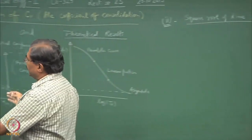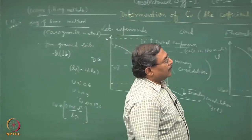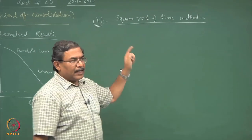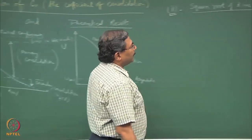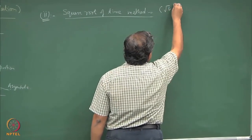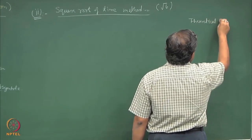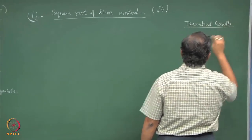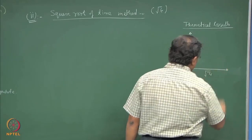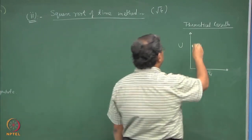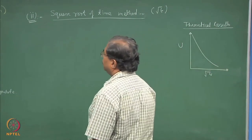The log of time method was used for fine-grained soils with very low permeability where consolidation times are extremely high. The square root of time method is for relatively less time-consuming consolidation — that means permeabilities are higher. So if I plot u versus the square root of Tv, you will get a graph showing a linear portion followed by a curvilinear portion.